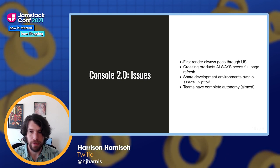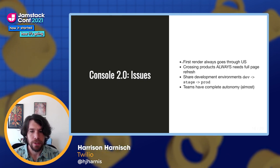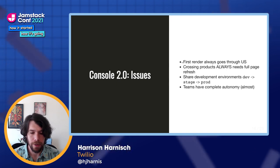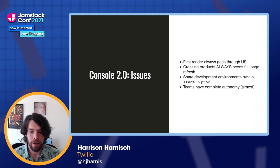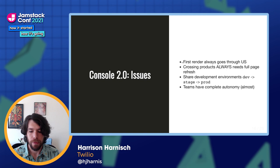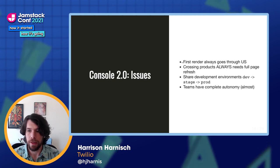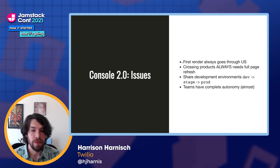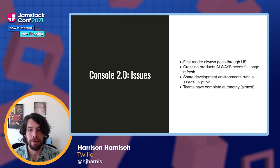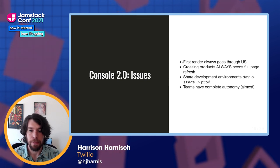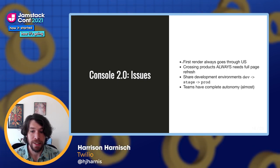Another issue we observed was that teams had to share development environments. This became a bottleneck because groups of people had to share a common resource in order to verify their code. When someone made a change on a branch and wanted to make sure it worked with the latest version of dev, they had to say, 'Hey, I need to grab the dev environment — is anybody else using it?' That became a pretty significant bottleneck.